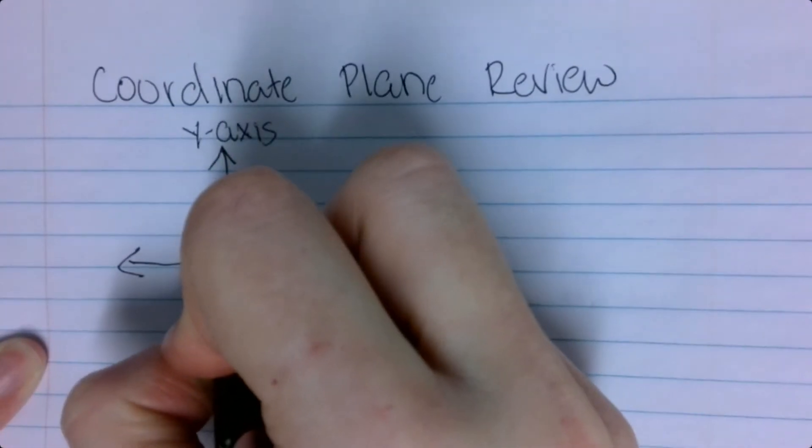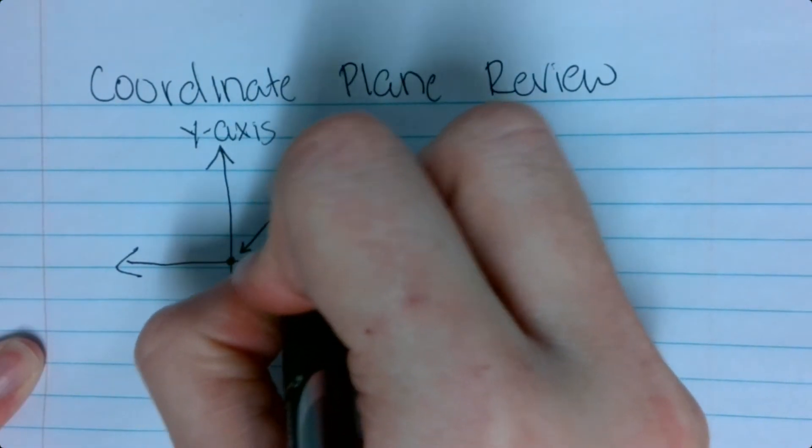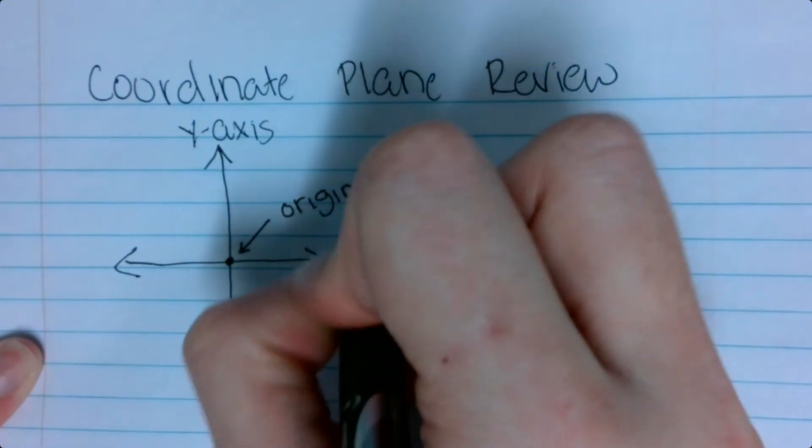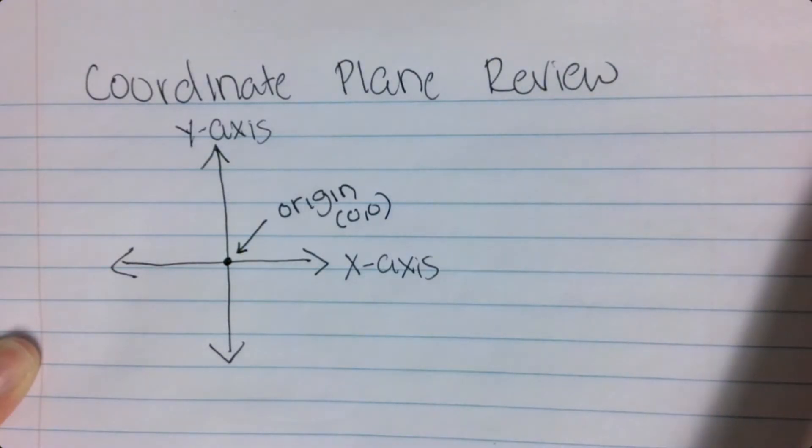Remember that where the two axes meet is called the origin, and that is the point (0, 0).